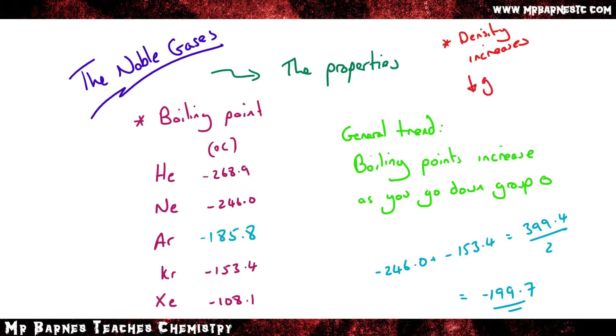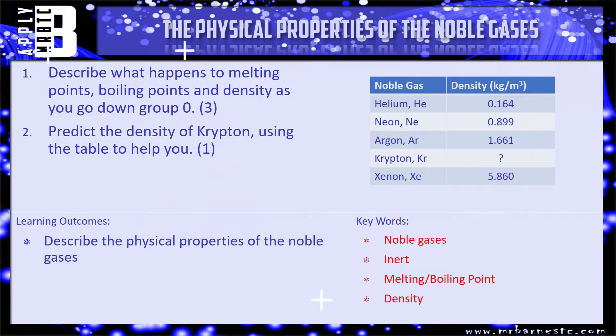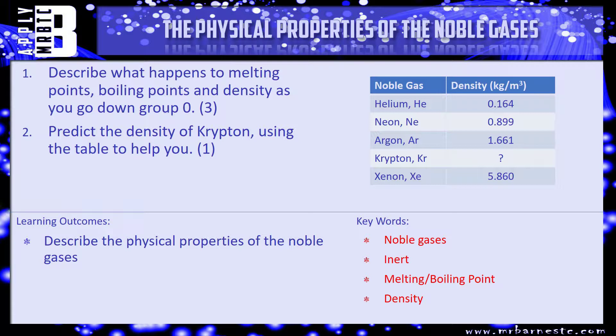Density also increases as you go down group zero but we'll get onto that in the apply question. So very similar to what we've just talked about. Describe what happens to melting points, boiling points and density as you go down group zero. Density you can use the table on the right to help you. Boiling points and melting points we've just talked about. And then predict the density of krypton using the table to help you.